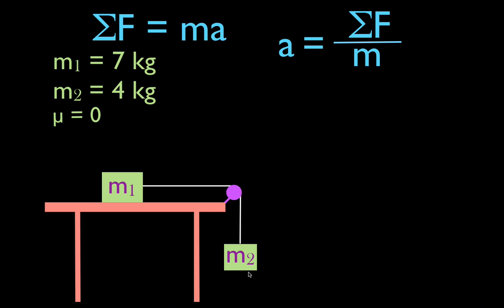Therefore we're going to apply Newton's second law to both of these objects at the same time — that's our system of objects, m1 and m2. We're given the masses: 7 and 4, so that's pretty easy. We have to sum up the forces, which means we have to draw in the forces. Before drawing the forces, we're going to assign the positive direction of motion for each object. m1 is going to move to the right, so positive is to the right for m1. m2 is going to move down, so down is positive for m2.